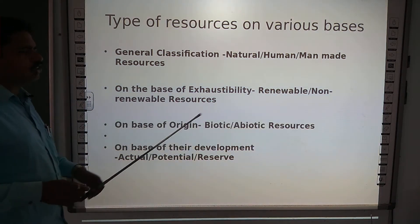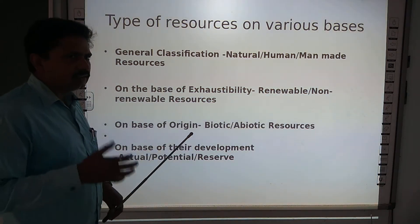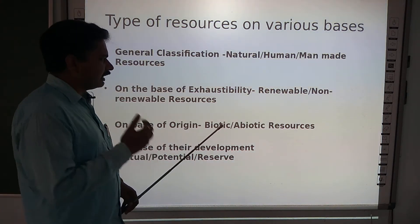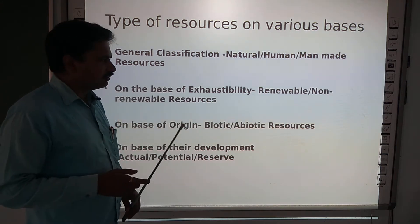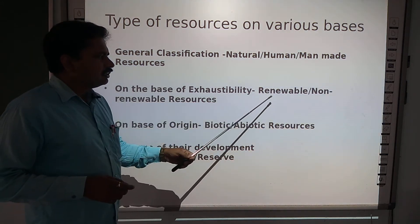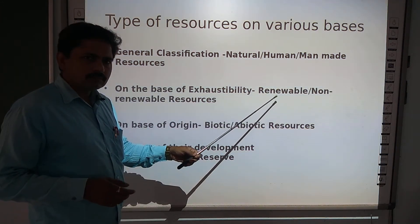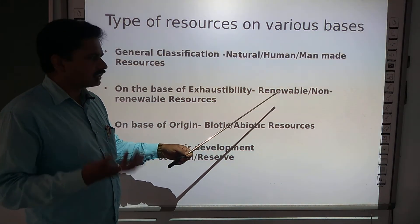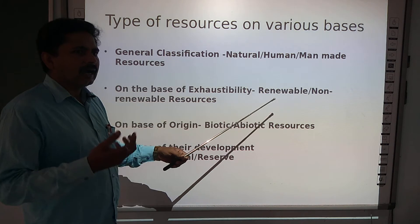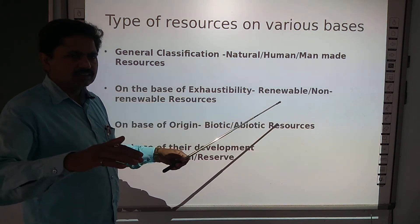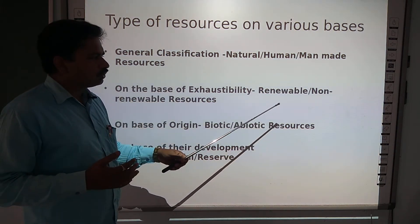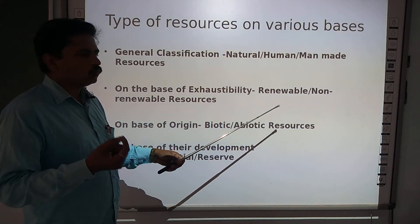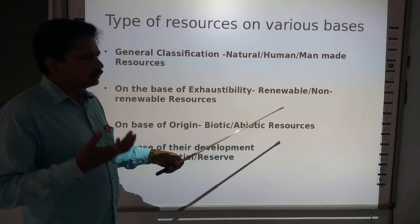On the basis of exhaustibility — exhaustibility refers to whether things get depleted or not, whether they are falling off or not. Resources which we use but do not get finished are non-exhaustible. Like hydroelectricity, which is produced by water — in this process, the water used is not actually consumed or lost.